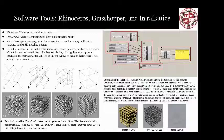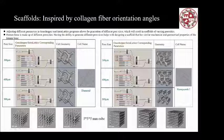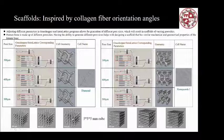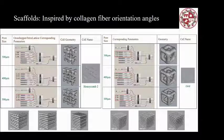To give you a better idea of the pore sizes: we designed three sizes — 300 micron, 400 micron, and 500 micron. The overall cube size is 5 by 5 by 5 millimeters. Through different geometries — diamond, honeycomb — we can create different models for different cell pore sizes and interior lattice cell geometries. We created Honeycomb 1, Honeycomb 2, Diamond, and Grid. For each different type we have three different pore sizes, giving us 12 different samples overall.